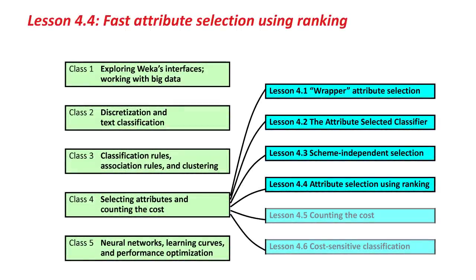Attribute Selection. Hello again. One final lesson on attribute selection. You're probably getting a bit fed up with attribute selection by now, but it's really important. It's one of the things that can really improve the performance of machine learning methods. More importantly, it really improves the understandability — you select out some attributes that are easy to explain to other people what you've done to get such good performance on their data set.